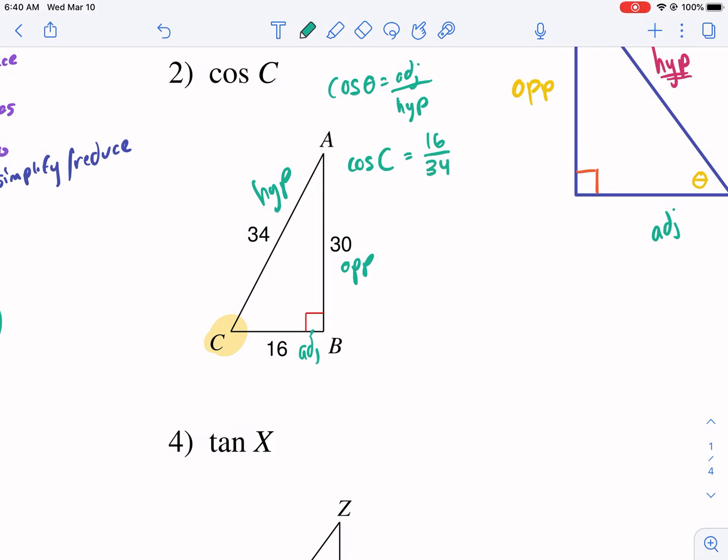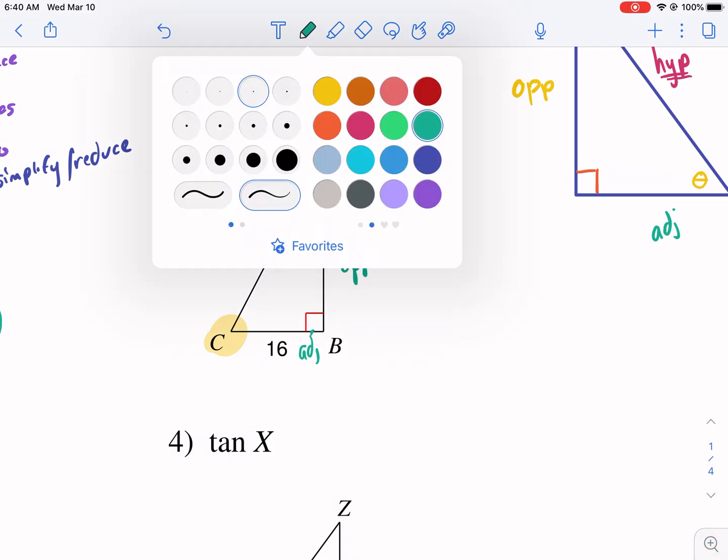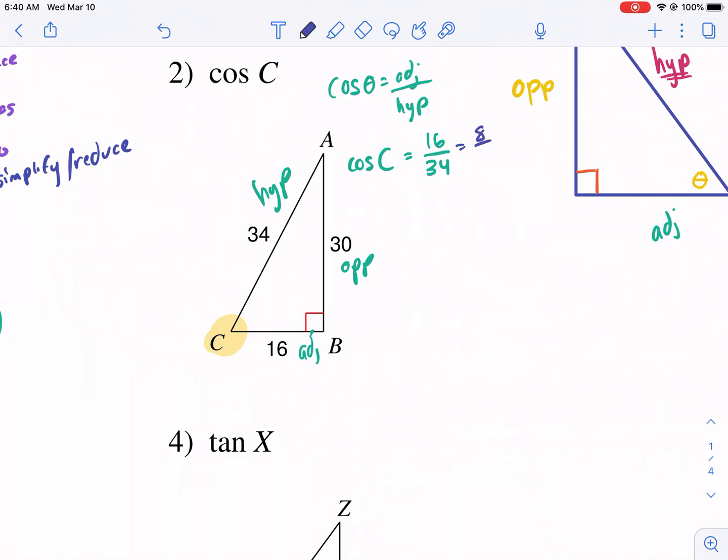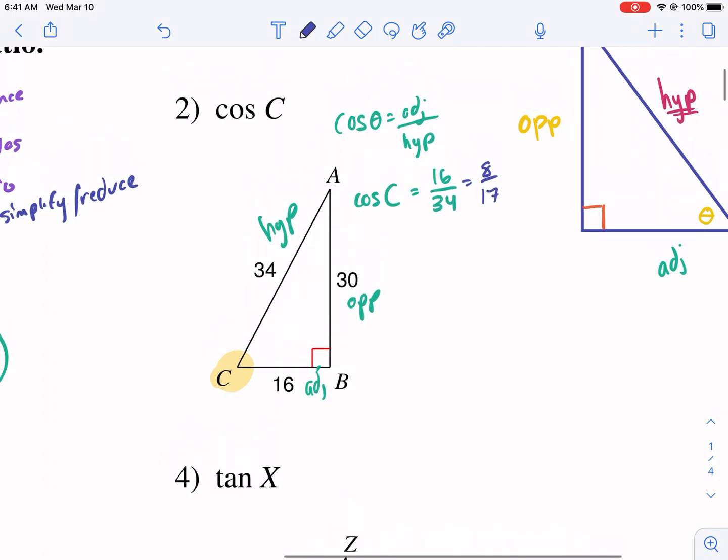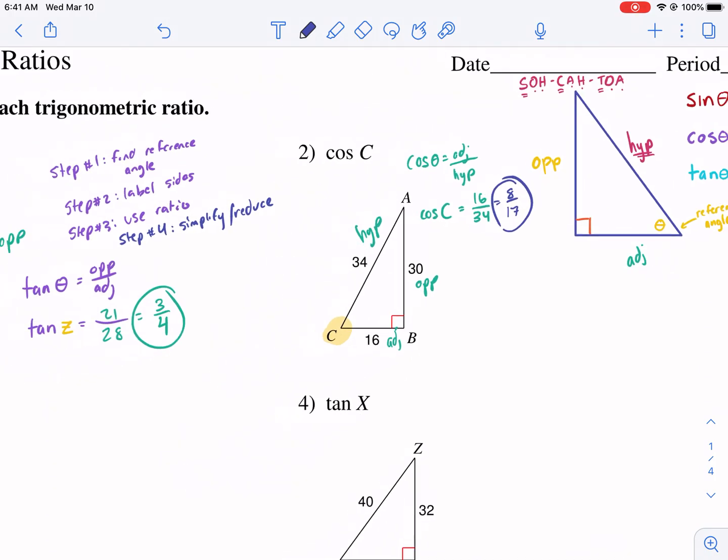Now you can reduce this one. 34 doesn't go into eight, but two. We can divide both the top and bottom by two. So we're going to get eight over, what is that? 17. I believe it is. Eight over 17. And that's as simplified as it can be. So eight over 17 is our answer for cosine of C.